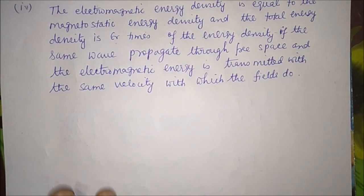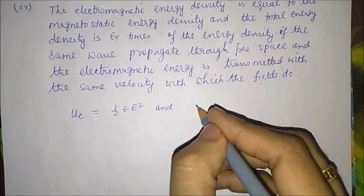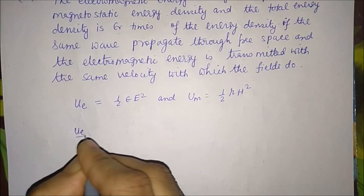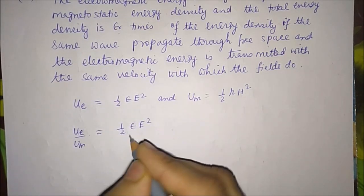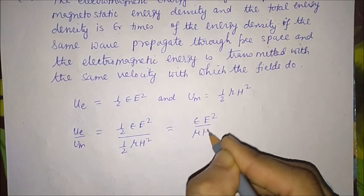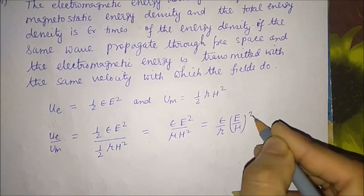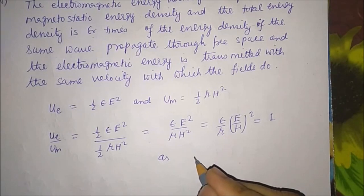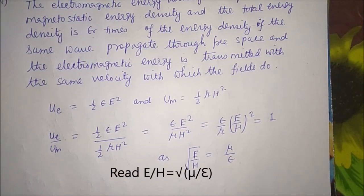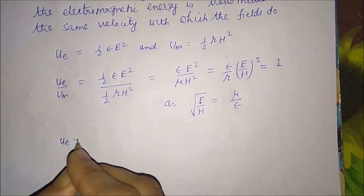The electrostatic energy density u_e equals (1/2) epsilon E², and the magnetostatic energy density u_m equals (1/2) mu H². The ratio u_e/u_m equals (epsilon E²)/(mu H²). This equals 1, since E/H equals sqrt(mu/epsilon), implying epsilon E² equals mu H².